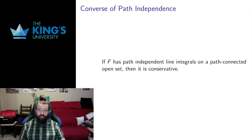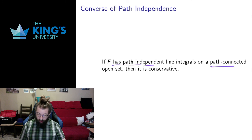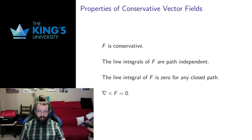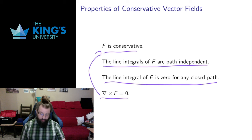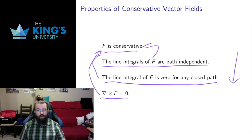Let me return to the converse of path independence to finish off this video. Conservative fields are path independent. The converse is: if something is path independent on a path-connected open set, then it is conservative. The converse requires the same topological considerations. To summarize everything about conservative vector fields across the last three videos, there are four equivalent properties: F is conservative; its line integrals are path independent; the line integral over any closed path is zero; and its curl is zero. The downward implications are all straightforward, while the reverse implications require a simply connected set or a path connected set depending on which direction you go.